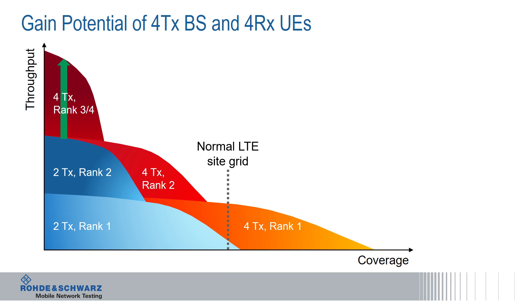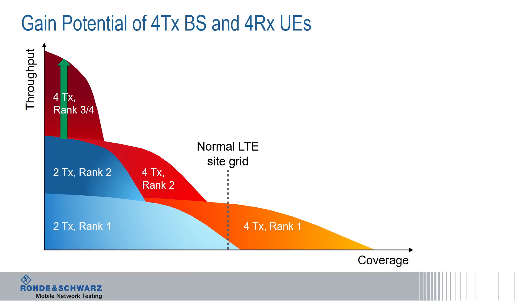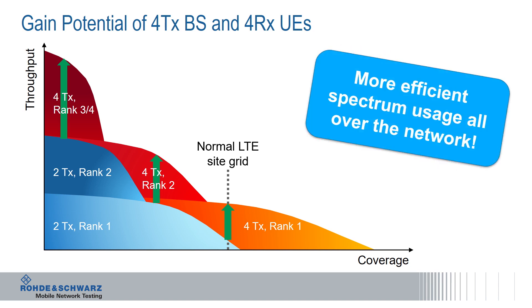What is more important is what's happening at the cell edge. LTE networks are normally planned for a stable data connection at transmit rank 1. The dotted line here shows the typical border of a typical LTE site grid. Exactly here, we see a big improvement — roughly 3 dB we can gain at the cell edge, and this really helps a lot in data throughput at the cell edge. We also have the gain in the middle with four transmits, rank 2. In summary, the air interface resources are more efficiently used, and this translates into capacity enhancements all over the network — not only close to the base station, but all over the network.